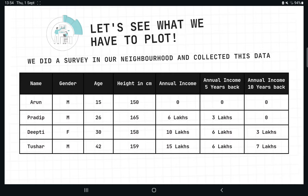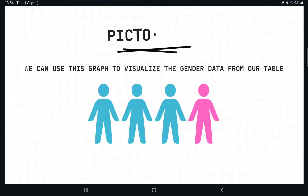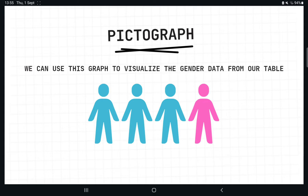The first graph we will discuss is the pictograph. It represents the frequency of data using images. The best value to represent using a pictogram from our data is gender. As you can see, we have visualized the gender data, and just by looking at this — because of the images and colors used — we can easily understand that 75% of our population was male and 25% was female. A pictograph is best used for such representations.